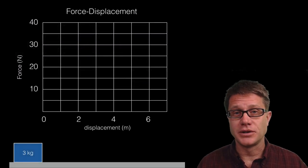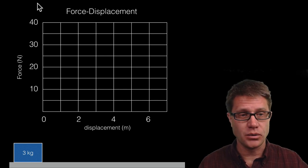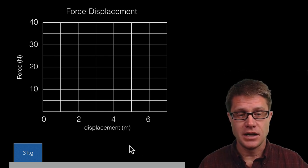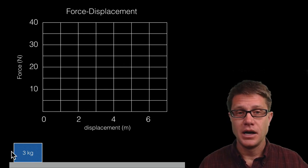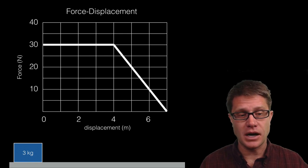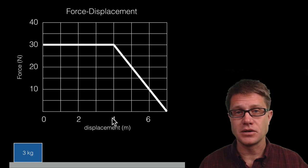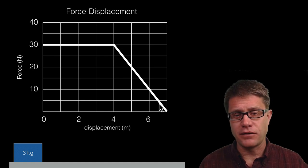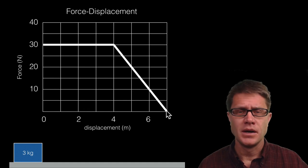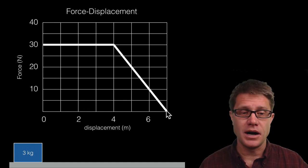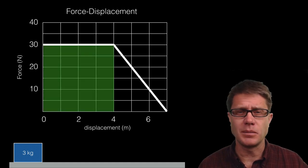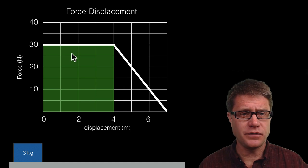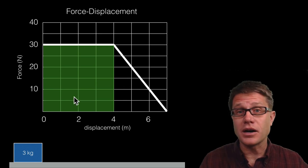A really nice tool to get at this is a force versus displacement graph. We have force on the side and then displacement along the bottom. Let's say we have this object, a 3 kilogram block, and we're going to apply the following forces to it. We apply a constant force to the right of 30 newton force for the first 4 meters, and then we lessen that force down to 0 over the next 3 meters. If I want to calculate how much work is being done on that block, I'm going to figure out the area under the curve.